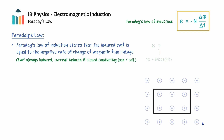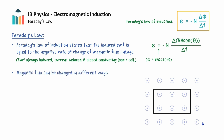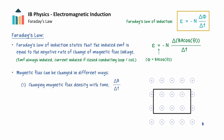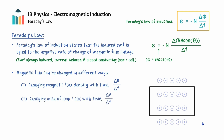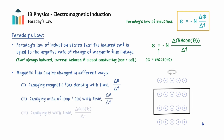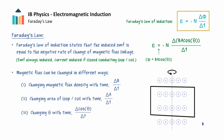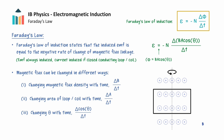If we substitute the equation for magnetic flux into Faraday's law, we see that magnetic flux can be changed in many different ways. We could have a time-varying magnetic field which changes the magnetic flux density with time. The area of the loop could change with time. Or we can rotate the loop which will change the angle between the magnetic field and area with time. Alternatively, any combination of these changes will cause a change in flux.